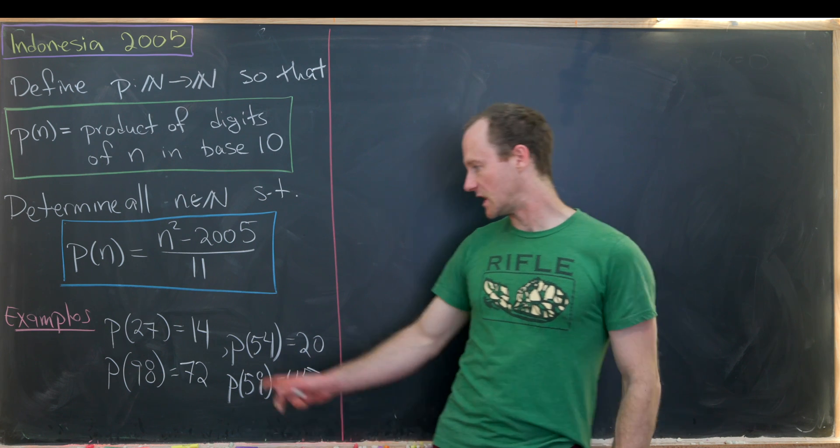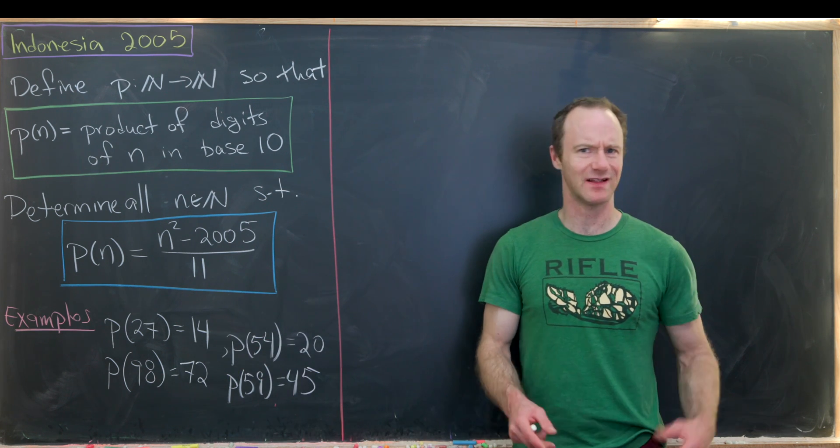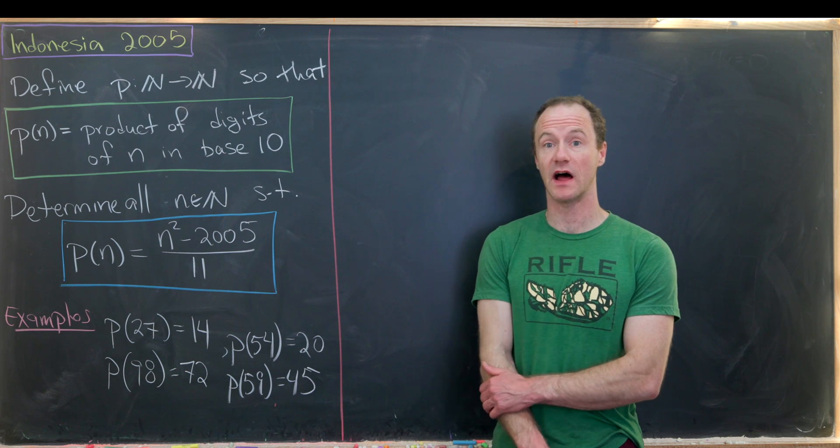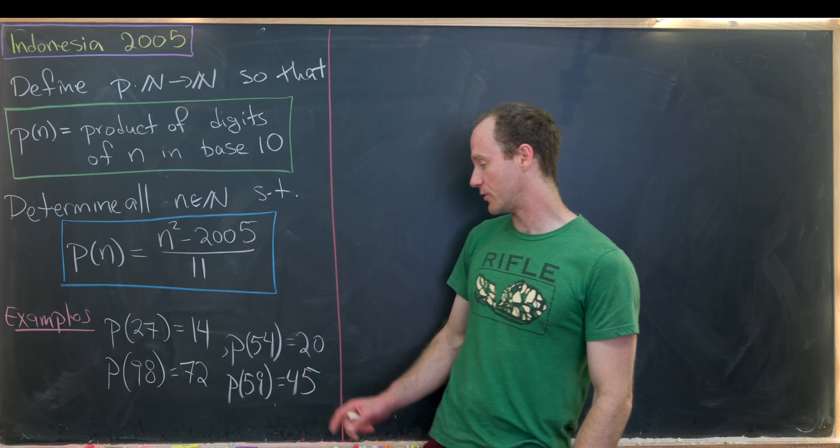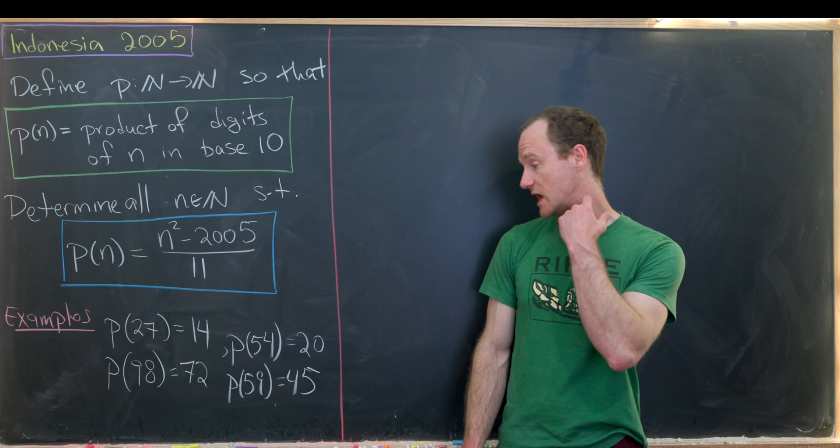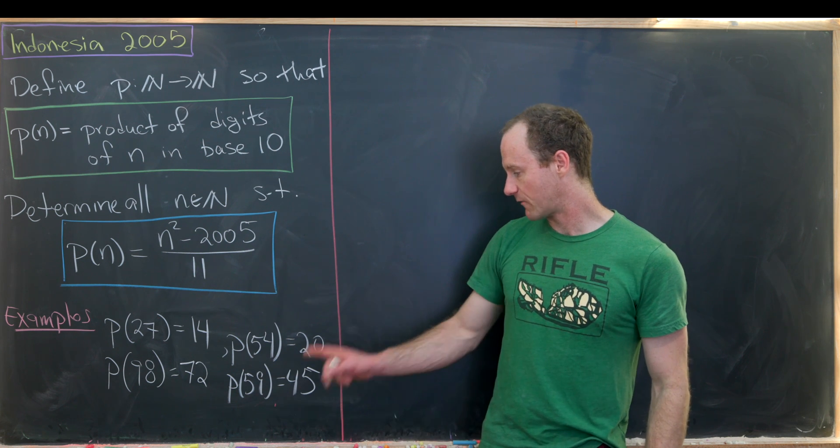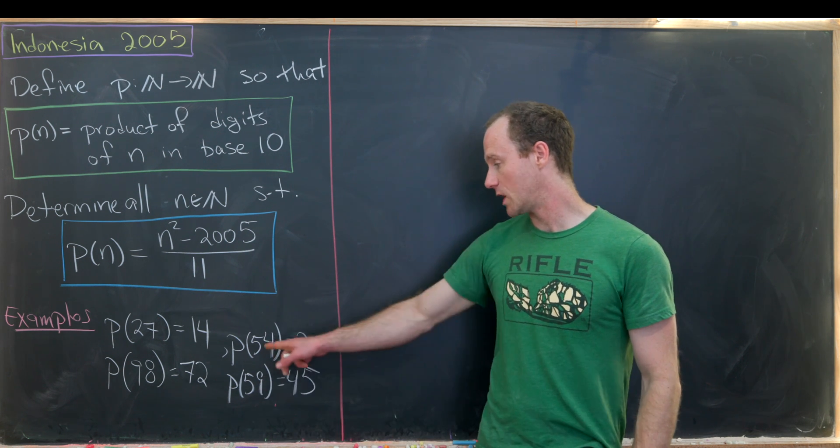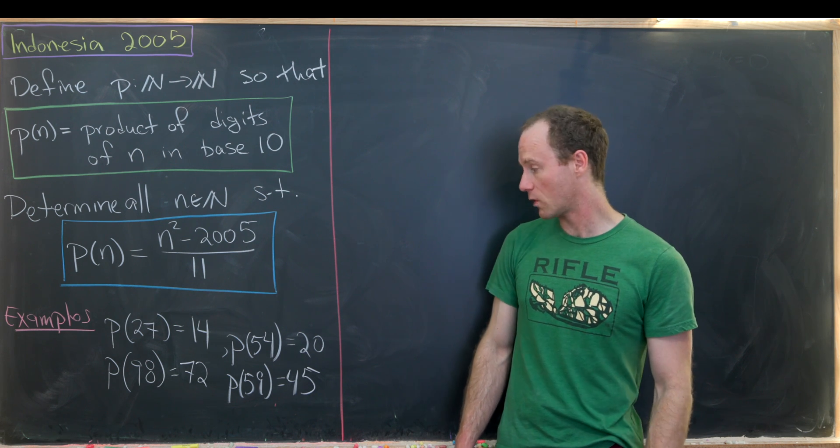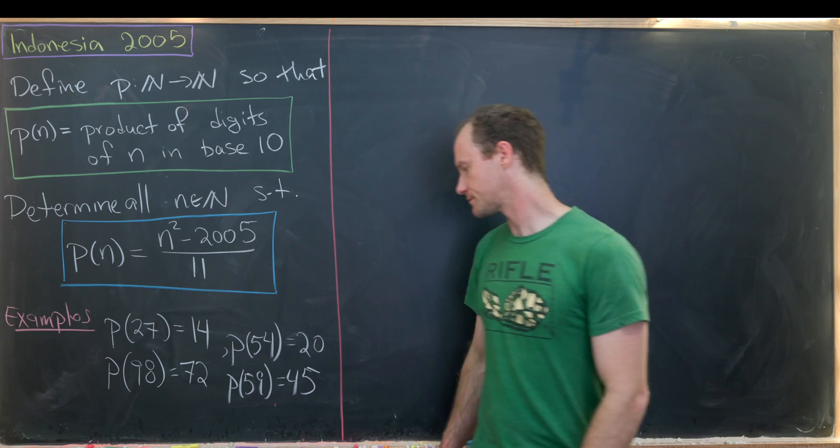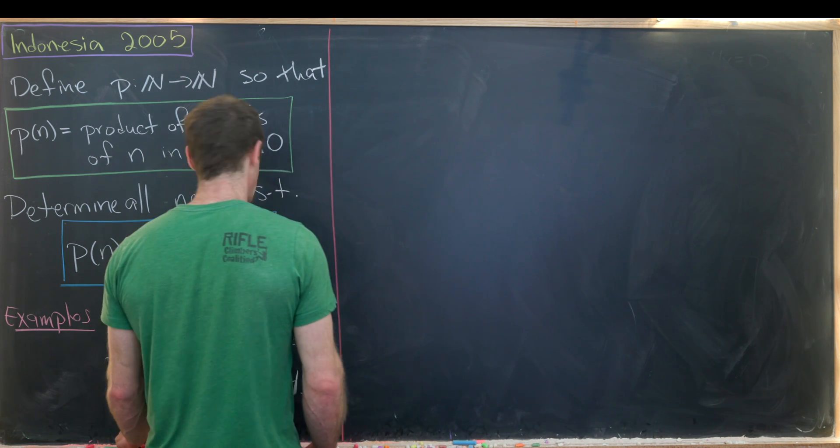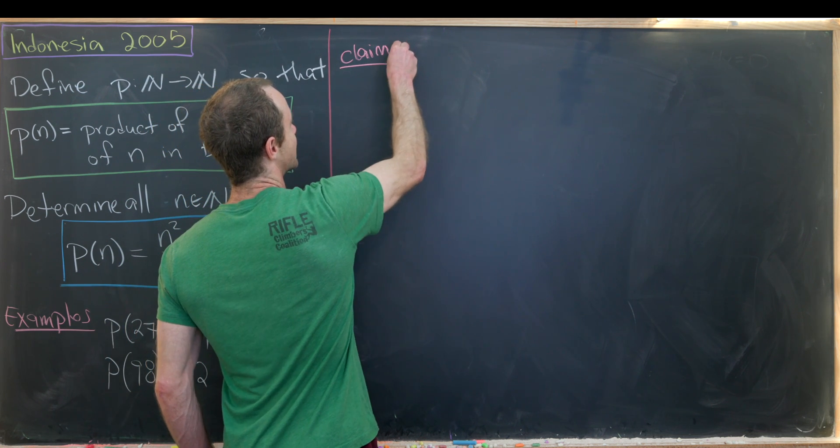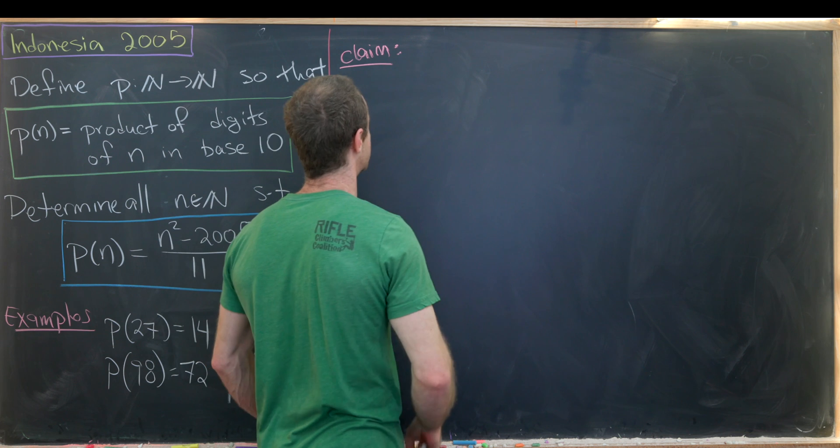Maybe most intriguing about these four examples as well as any other examples that you might make having more digits if you'd like is that p evaluated at n is always smaller than n. Notice that 45 is smaller than 59. 20 is smaller than 54. So on and so forth. So maybe that could be a claim that we start with.